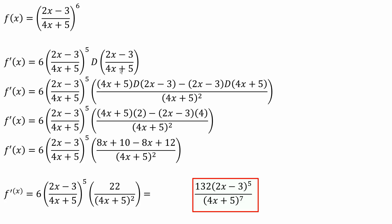So low, meaning 4x plus 5, times the derivative of high, 2x minus 3, minus high, 2x minus 3, times the derivative of low, 4x plus 5, divided by the square of what's below, so 4x plus 5 squared.